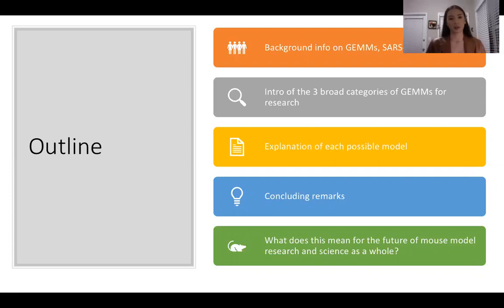First we're going to go into the background info on what GEMs are and SARS COVID-19 in general. Next we're going to go into an intro about the three broad categories of GEMs. Then we're going to go into an explanation of each model, our concluding remarks, and then we're going to take a step back and think about what does this mean for the future of mouse model research and science as a whole.